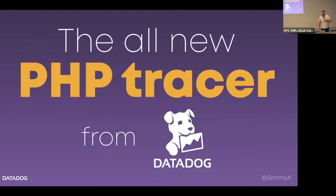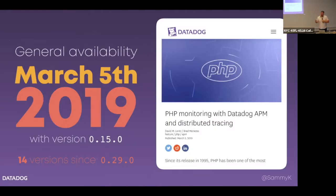Here at Datadog, we have the PHP Tracer. It's quite new. It came out on March 5th of this year, and it was released with version 0.15. Today we are 14 versions in at 0.29. So lots of development has been happening on the tracer. It's been morphing into something really great, and each release there are more and more great features.